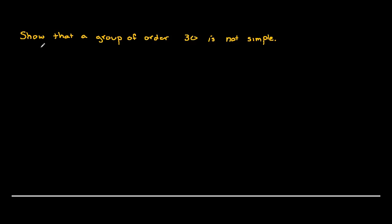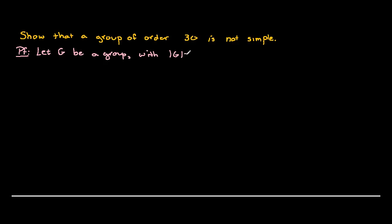In this video we're going to show that a group of order 30 is not simple. We'll begin by applying Sylow's theorem. We'll let G be a group such that the order of G equals 30, and we'll write 30 as a product of primes: 2 times 3 times 5.